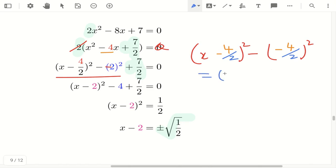So this will give us x minus 2 square minus, minus 4 divided by 2 is minus 2 square, which is equal to x minus 2 square minus 4.